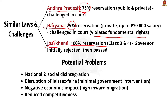In Jharkhand, a bill providing 100% reservation for locals in Class 3 and Class 4 jobs was returned by the Governor as unconstitutional, but was later enacted. Domicile-based reservation can also lead to national and social disintegration, disruption of laissez-faire policy, major economic impact in areas with high inward migration, and reduced competitiveness.